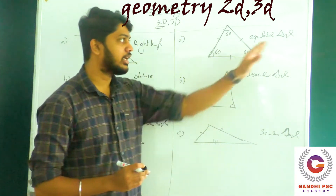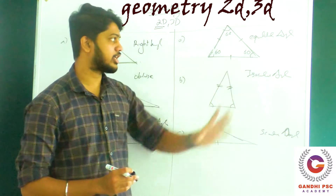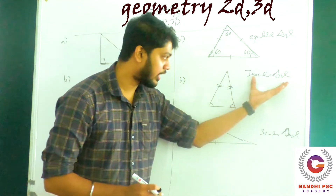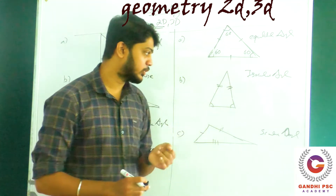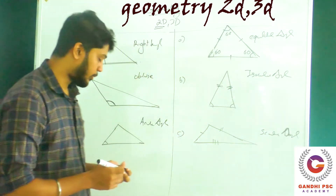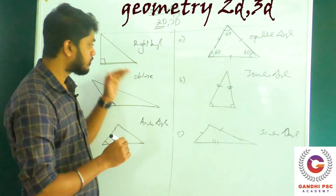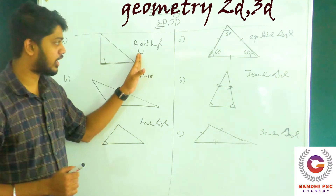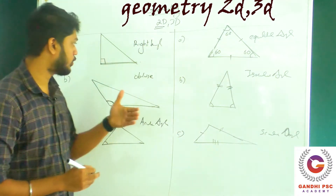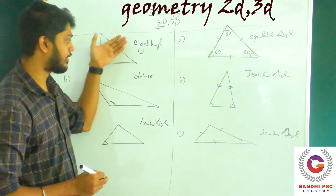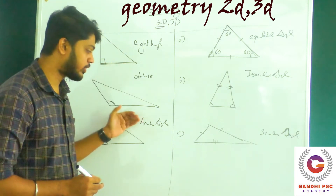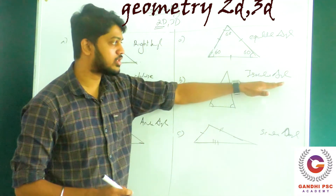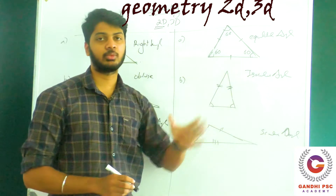There are two lines in the triangle. We have all sides equal, then we have two sides equal, then we have three sides. We classify: the right triangle, the obtuse triangle, the acute triangle.